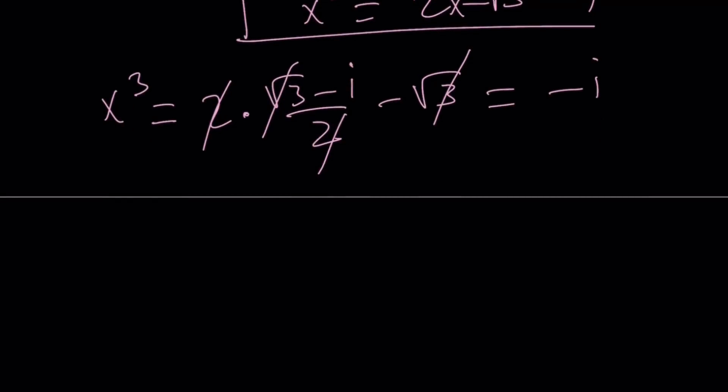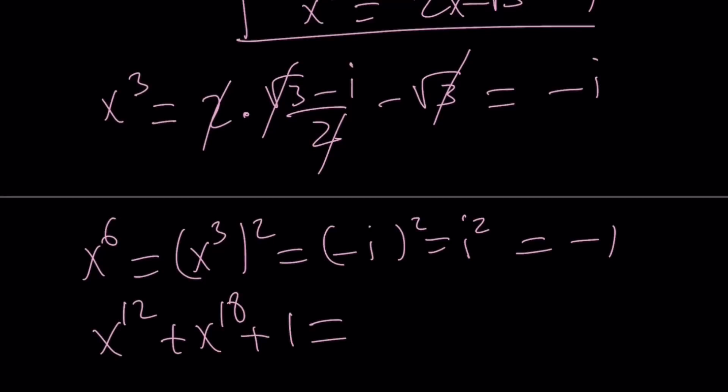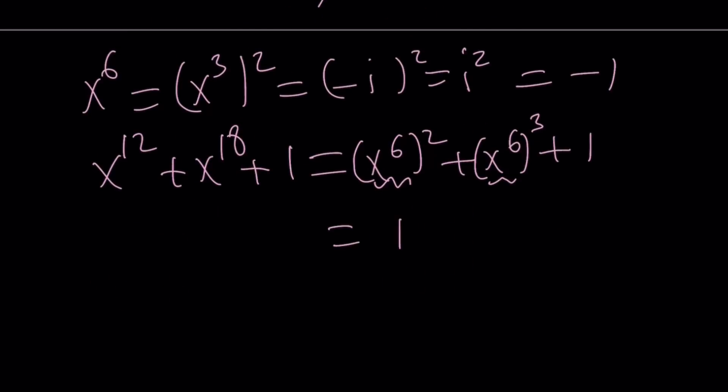Because I'm going to find x to the 6, which is x cubed squared, and it doesn't matter. Negative i to the second power is i squared, and that is equal to negative 1. So, x to the 12 plus x to the 18th, plus 1, x to the 12th is x to the 6 squared, x to the 18th is x to the 6th to the 3rd, plus 1, this is negative 1, this is negative 1, 1 minus 1 plus 1 gives us 1 again.